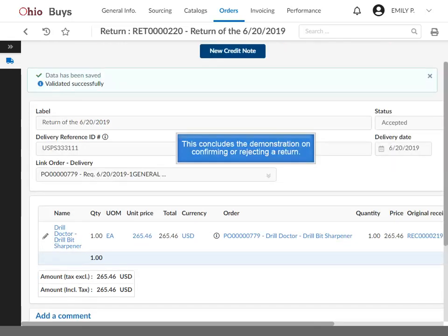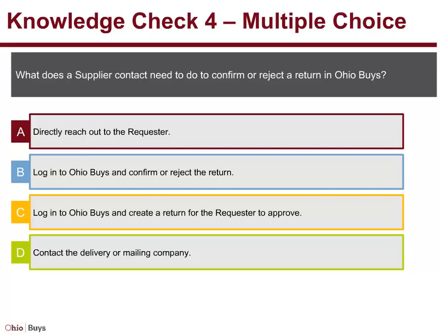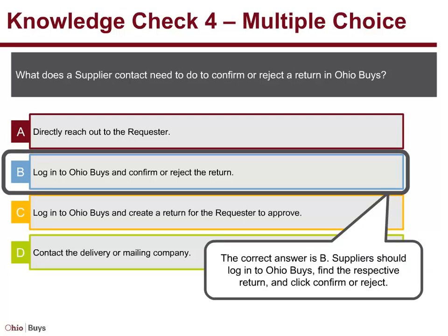This concludes the demonstration on confirming or rejecting a return. Knowledge Check 4. Multiple Choice: What does a supplier contact need to do to confirm or reject a return in OhioBuys? Option A: Directly reach out to the requester. Option B: Log in to OhioBuys and confirm or reject the return. Option C: Log in to OhioBuys and create a return for the requester to approve. Or, Option D: Contact the delivery or mailing company. The correct answer is B. Suppliers should log in to OhioBuys, find the respective return, and click Confirm or Reject.